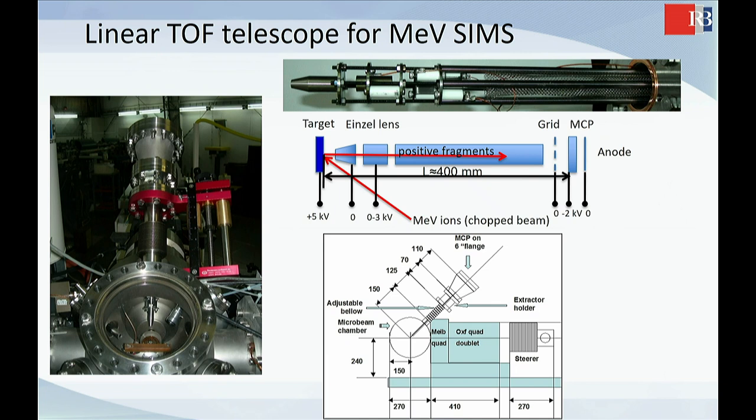So this is this extractor, some lenses, 400 millimeters. So this is flight to the microchannel plate. In this case, we don't have this reflection.